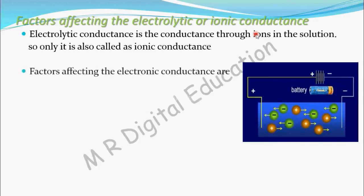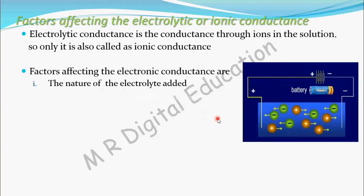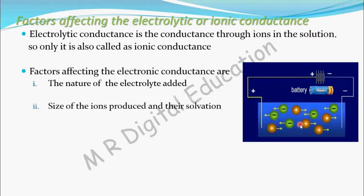Now let's see what factors affect Ionic Conductance. The first factor is the nature of the electrolyte added. If we add a weak acid, it will dissociate only partially, so there will be fewer ions and lower conductivity. If we add a strong electrolyte, it dissociates completely, producing more ions, which means higher conductivity.